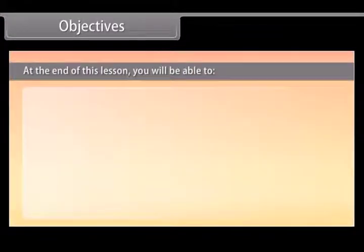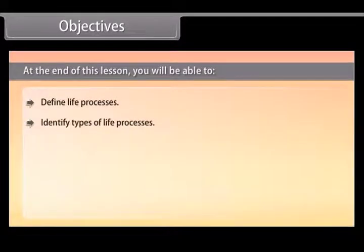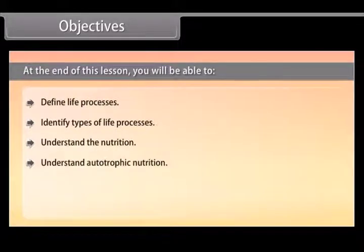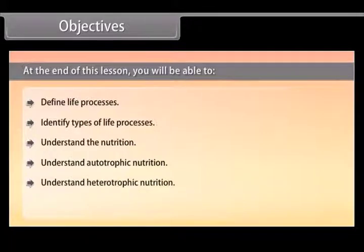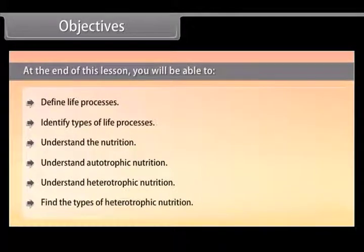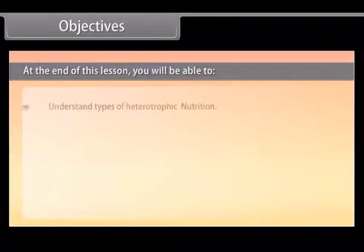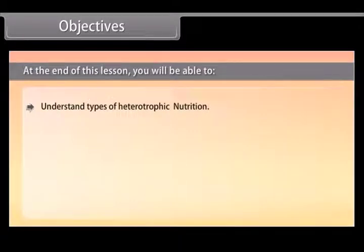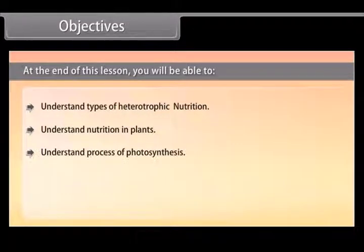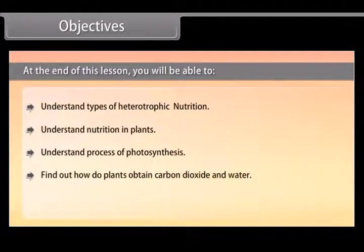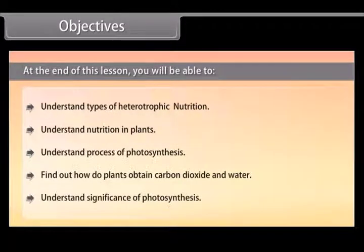At the end of this lesson you will be able to define life processes, identify types of life processes, understand nutrition, autotrophic nutrition, heterotrophic nutrition, find the types of heterotrophic nutrition, understand nutrition in plants, the process of photosynthesis, find out how plants obtain carbon dioxide and water, and understand the significance of photosynthesis.